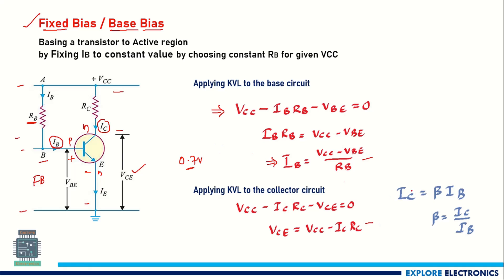The collector current IC can be written as β·IB, where β is the current gain parameter and β = IC / IB. This β is constant for any given transistor, and using it we can find IC and IB. We need to keep IB, IC, and VCE all constant to fix the operating point for the transistor to function as an amplifier.